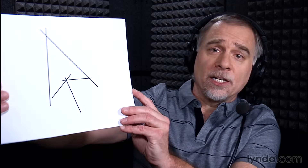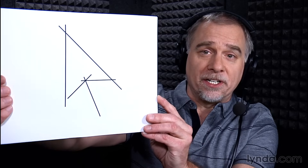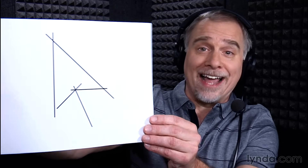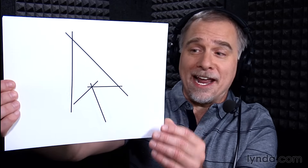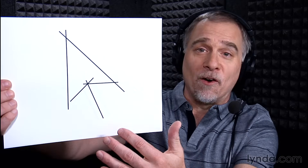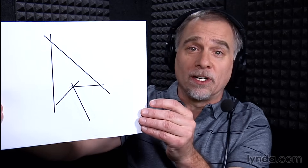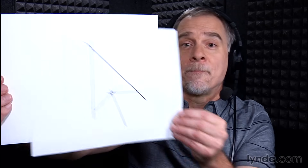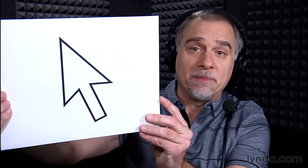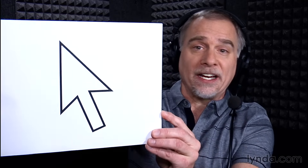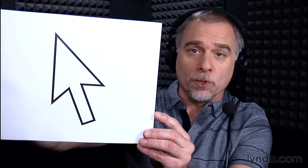You're going to have to have the most recent version of the software, or you can just hang out with us and wonder in amazement as we take this haphazard collection of paths that I drew using the line segment tool. You can see how they just kind of overlap or they don't even overlap. And with just a few drags, we're going to go ahead and join them together into this perfectly united white arrow. Let me show you exactly how it works.